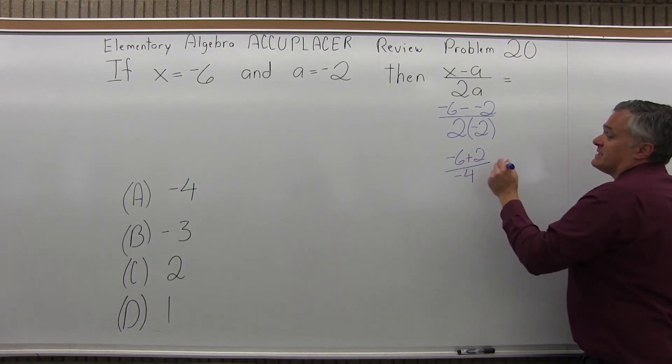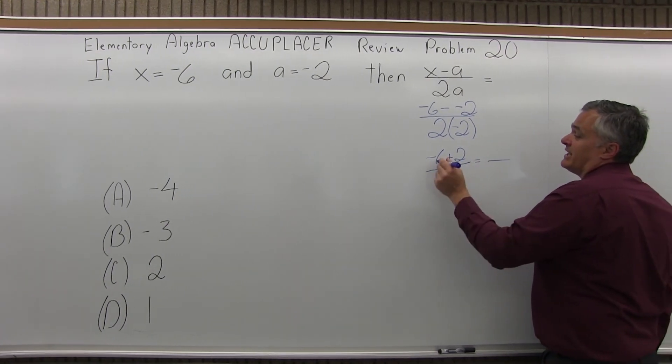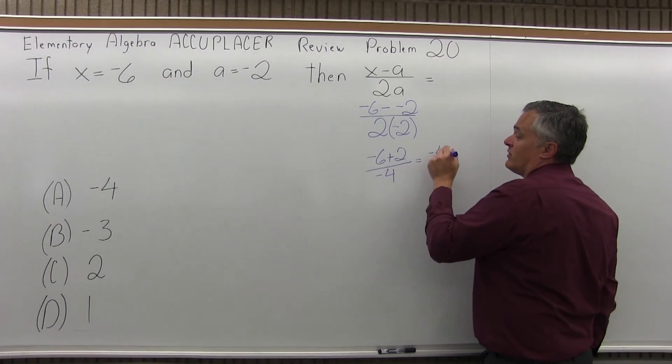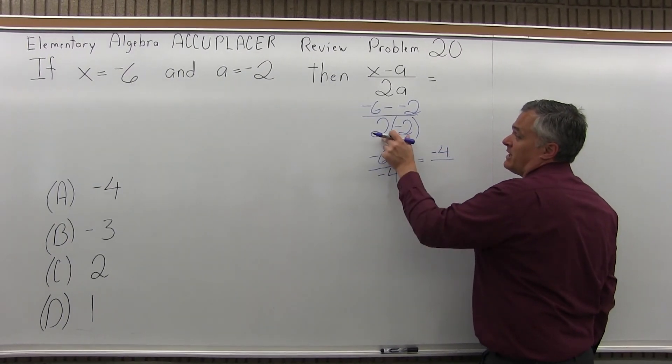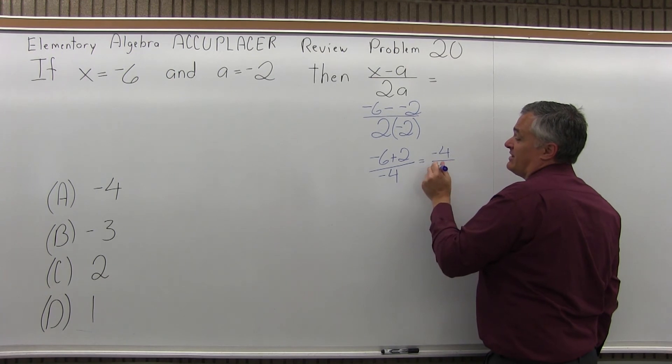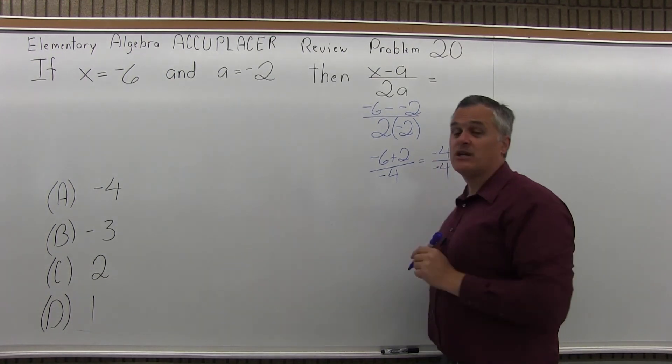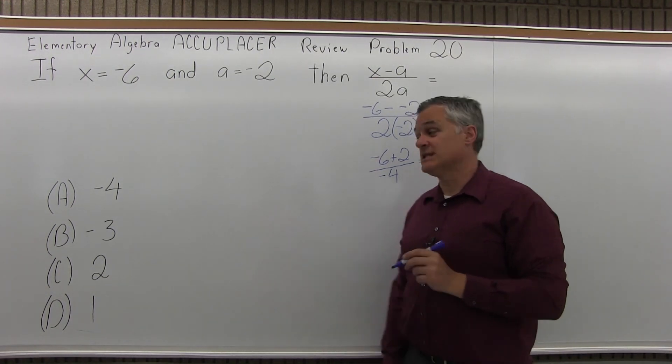Now negative 6 plus 2 on the top, you're going to have a negative 4 on the top. In the denominator, 2 times negative 2, I have another negative 4. So negative 4 over negative 4 reduces nicely to 1.